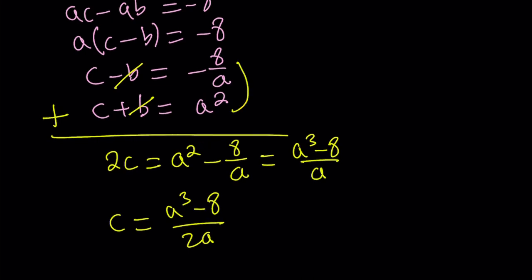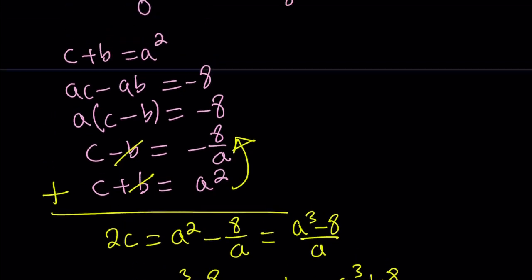Instead of adding, if you subtract these two equations, you get rid of c and end up with b. Which becomes the same thing but with a plus sign. So this is going to be the b value. So we got the b and the c. And now it's time to use the third one.